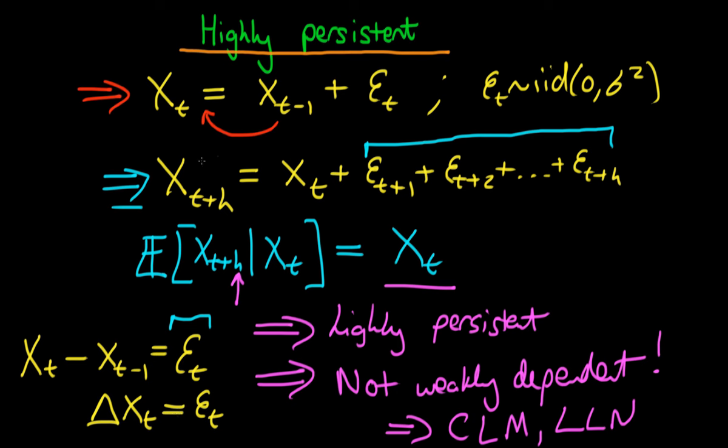Even though the time series Xt, or the process Xt, followed a random walk which was highly persistent, the change in Xt is not highly persistent, it is weakly dependent. And we can use the change in Xt in any regression without any problems.